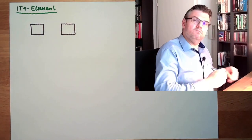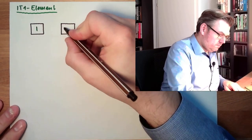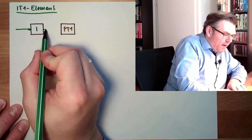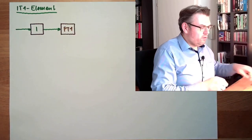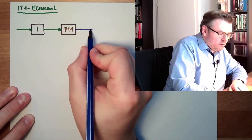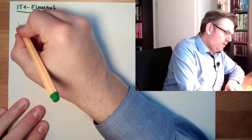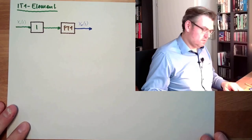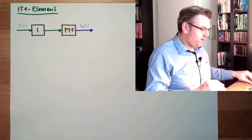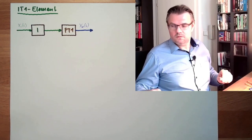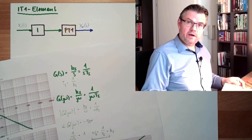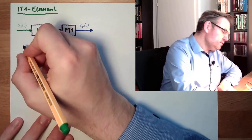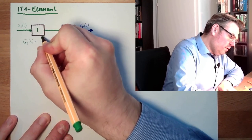There is an input into those elements, and the output of the I element will be transferred to the PT1 element. Then there is the output of the IT1 element. Let's remember the transfer functions. The transfer function of the I element is 1 divided by s — so G_I(s) = 1/(s·T1), calling it T1 since it's the first element.